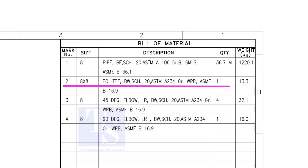What is WPB? W means weldable, P means pressure, B is grade B, which refers to the minimum yield strength.